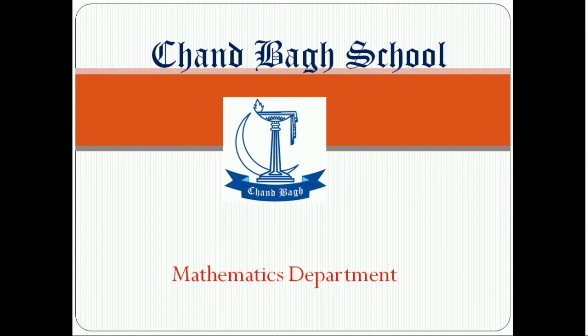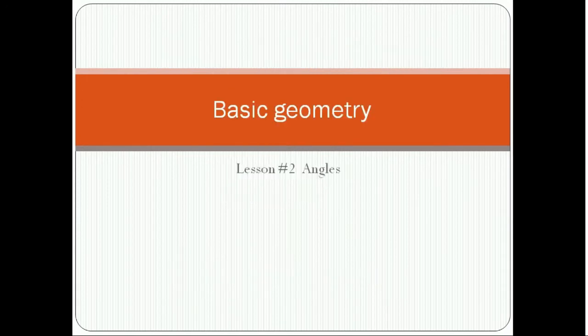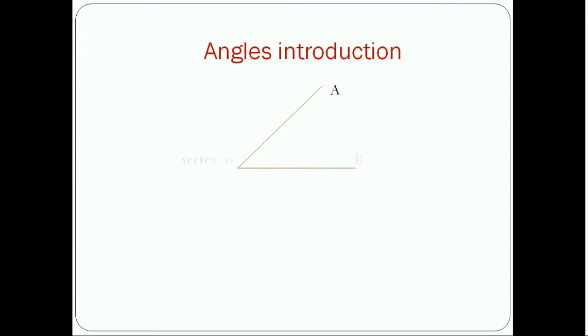Bismillahirrahmanirrahim. Assalamu Alaikum students. My topic is basic geometry, lesson number two: Angles. First of all I will tell you about angles. You can see here, it is one line and this one is a second line. When two lines meet at a point, the vertex is formed. You can see here the vertex is O.